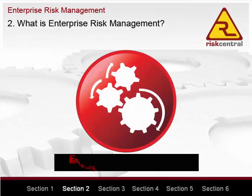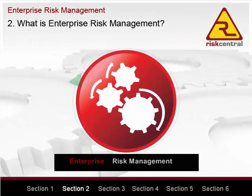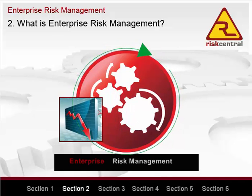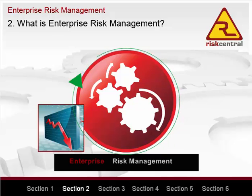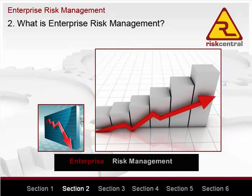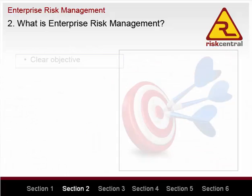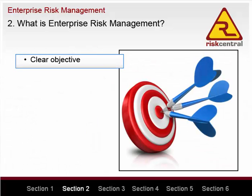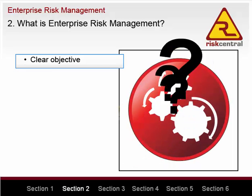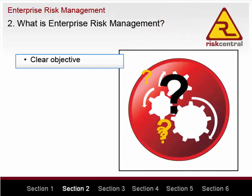The term enterprise risk management was conceived as a name for an overarching business management process designed to reduce the chance of a business experiencing major losses and increase the chance of businesses achieving their goals. The objective of ERM is clear and generally agreed, but that is where the agreement ends. There is no general agreement on what this process should look like and how it should work.